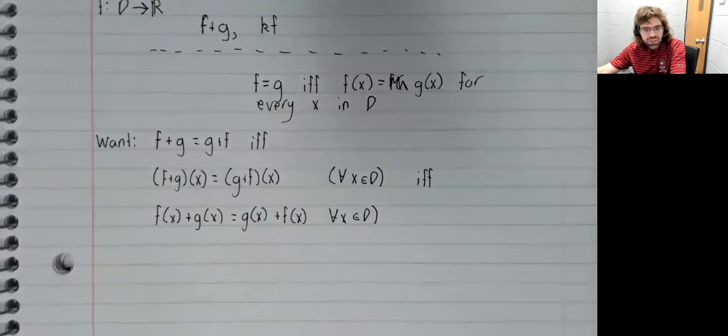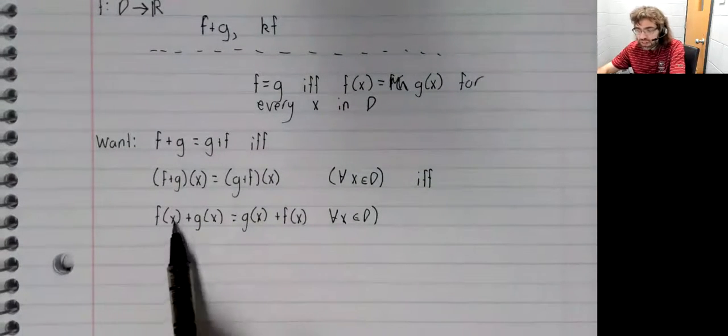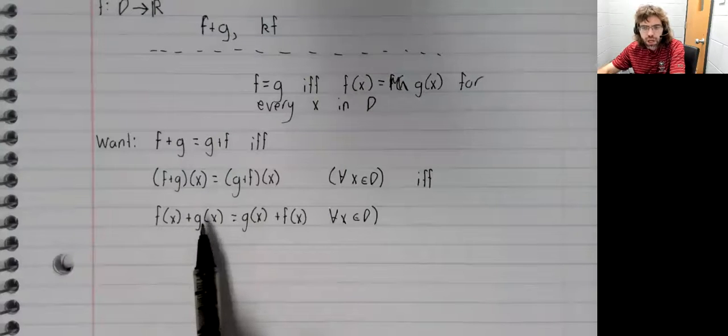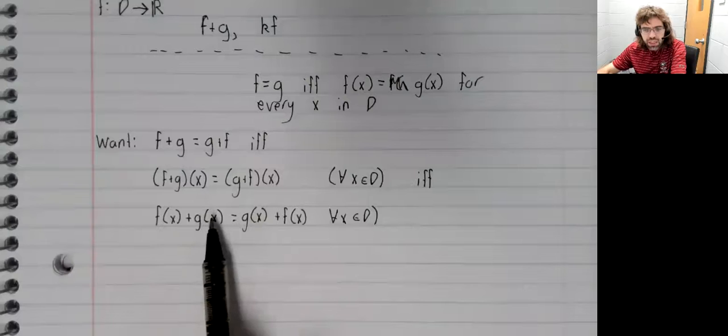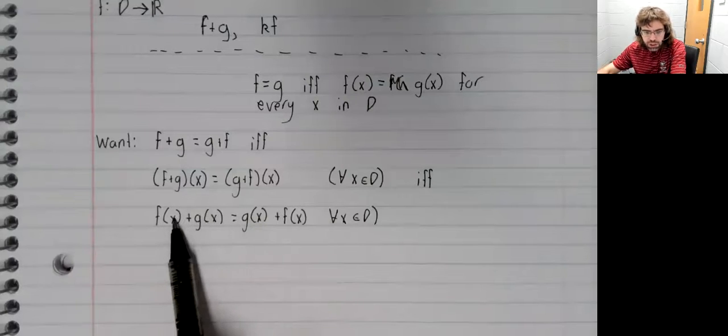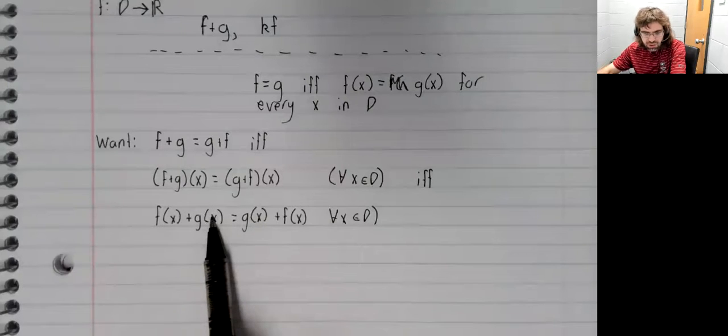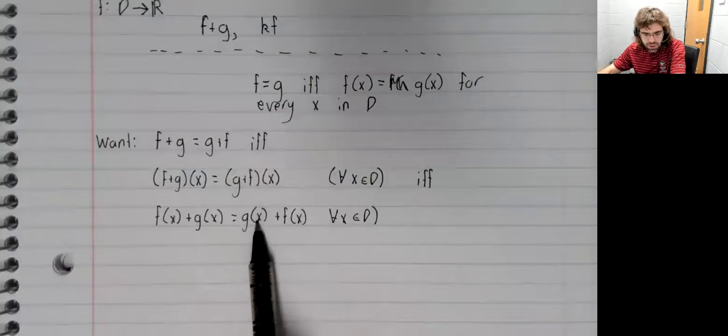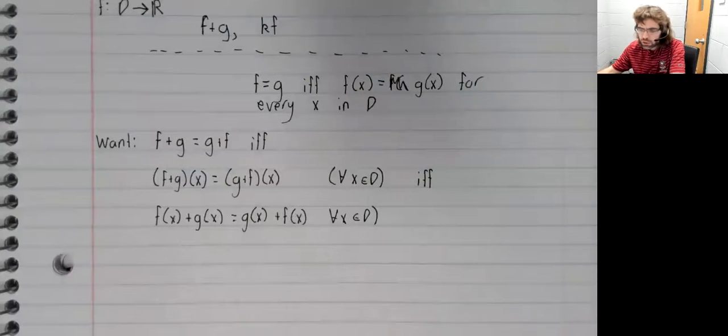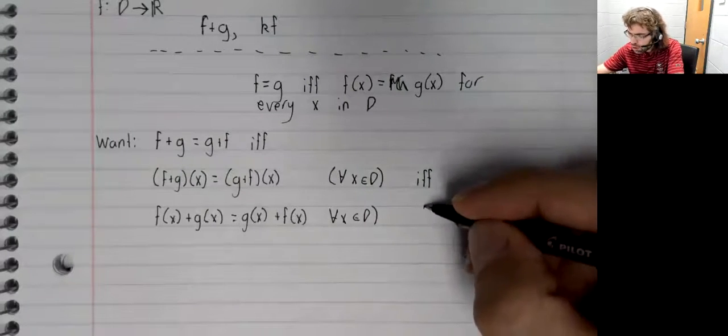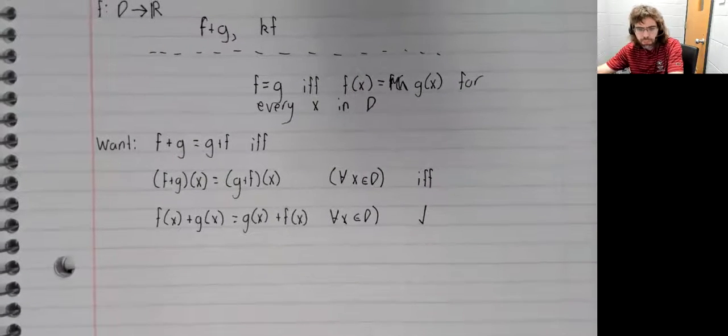And this is simply true because f of x and g of x are real numbers, and real addition is commutative. This real number plus this real number equals this real number plus this real number. Order doesn't matter when you're adding real numbers.